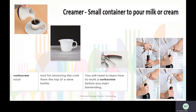The next terminology is creamer — a small container used to pour milk or cream into coffee or tea. Next is corkscrew, also referred to as a waiter's kit or wine opener. It is a tool for removing the cork from the top of a wine bottle.